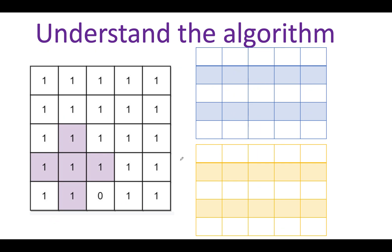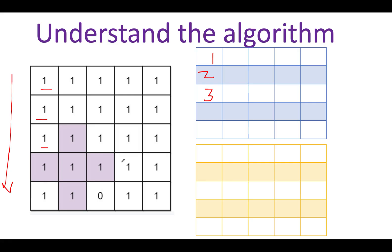Now let's start the iteration in the other two directions — this time moving from top to bottom column-wise, then from bottom to top. Moving from top to bottom on the first column: I see one, so I add one; then another one — two; another one — three; another one — four; another one — five.